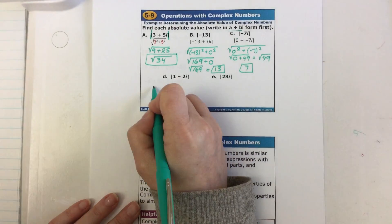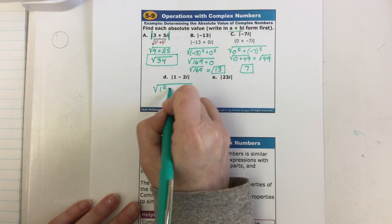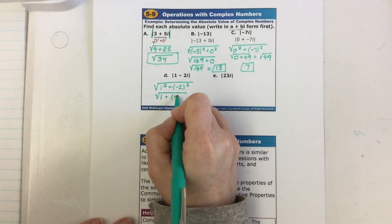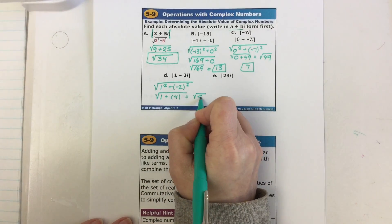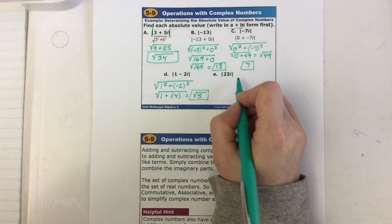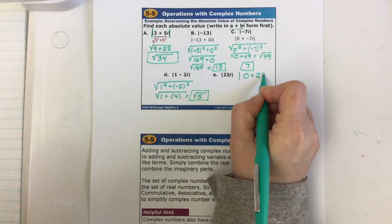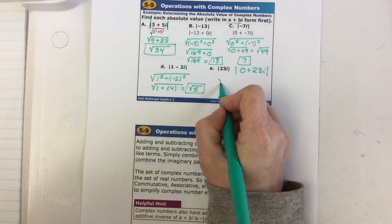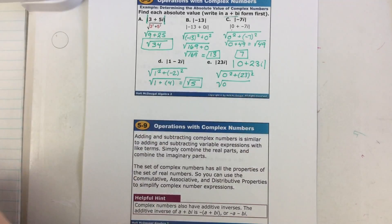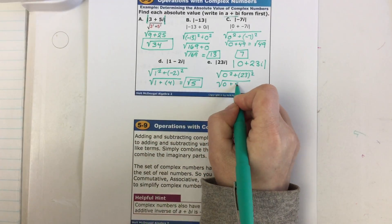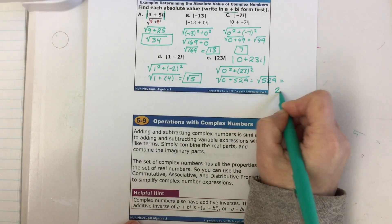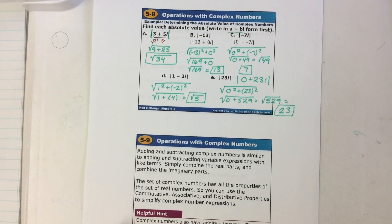A couple more and we'll move on. Absolute value: take the real part squared plus the imaginary part squared. One squared is one; negative two squared is four. One plus four is five — I cannot break apart five, so your solution would be the square root of five. Last one: I first need to put in a real part, so this is 0 + 23i. Zero squared plus 23 squared: zero squared is zero, 23 squared is 529. Square root of 529 is 23. That is the second skill.